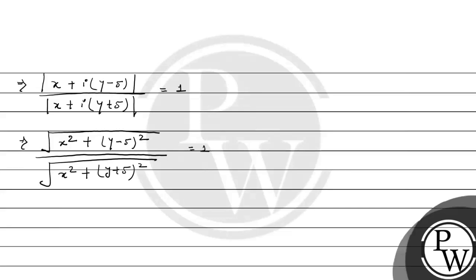Now we cross multiply. So root over x squared plus y minus 5 whole squared equals root over x squared plus y plus 5 whole squared.